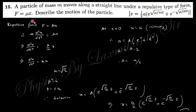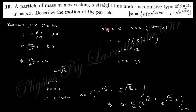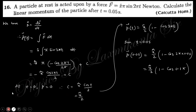Next question: a particle of mass m moves along a straight line under a repulsive force F = μx. Writing F = m·d²x/dt², we get d²x/dt² = (μ/m)·x. The solution of this differential equation — for which there is a separate playlist — gives a general solution. Applying the initial condition x = a at t = 0 allows you to find the constant A and arrive at the final answer.